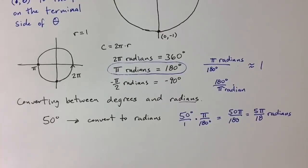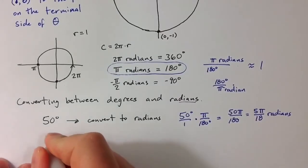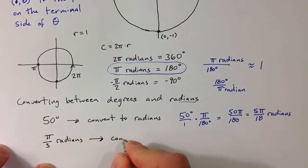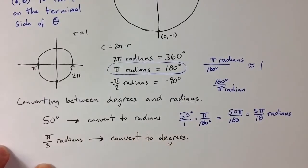So that would be the number of radians that corresponds to 50 degrees. A similar problem: let's say we have π over 3 radians, and I want to convert that to degrees.